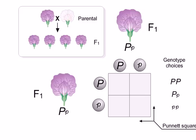Using the information provided, predict the genotypes of the offspring. Drag the correct genotypes to each square in the grid.